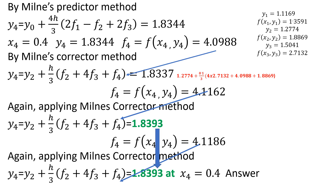Now using Milne's Predictor-Corrector method, since we know y0, y1, y2, y3 and f0, f1, f2, f3, we apply the predictor formula to calculate y4. With x4 = 0.4, we get a predicted y4 value, and from that we calculate the predicted f4.